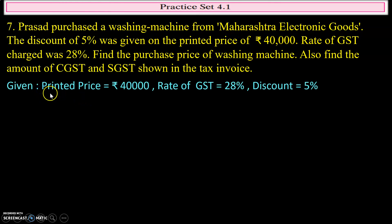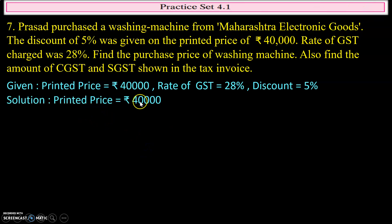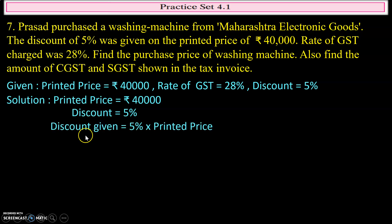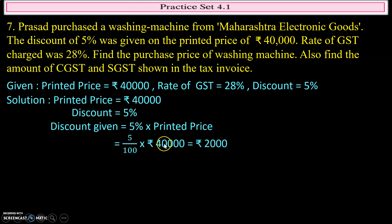The printed price is ₹40,000, the rate of GST is 28 percent, and the discount is 5 percent. First, we find the discounted price. To do that, we first calculate the discount: discount equals 5 percent of the printed price, which equals 5/100 × 40,000. Cancelling the zeros, we get ₹2,000.